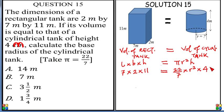When you multiply this, you're going to have 22 times 7, which is 154. So 154 is equal to 88 r squared over 7. We're going to cross multiply now. 88 r squared is equal to 7 times 154.